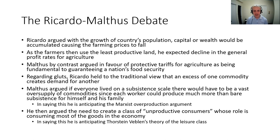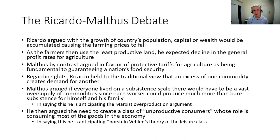Regarding gluts, Malthus argued that if everybody lives on a subsistence level there would be a vast oversupply of commodities, because each worker can produce far more than bare subsistence for themselves and their family. He then raises the concept of a class of unproductive consumers — people whose role is simply to consume most of the goods in the economy. In this way he anticipates Thorstein Veblen's theory of the leisure class and conspicuous consumption — could that class resolve one of the crisis points in our economic system?